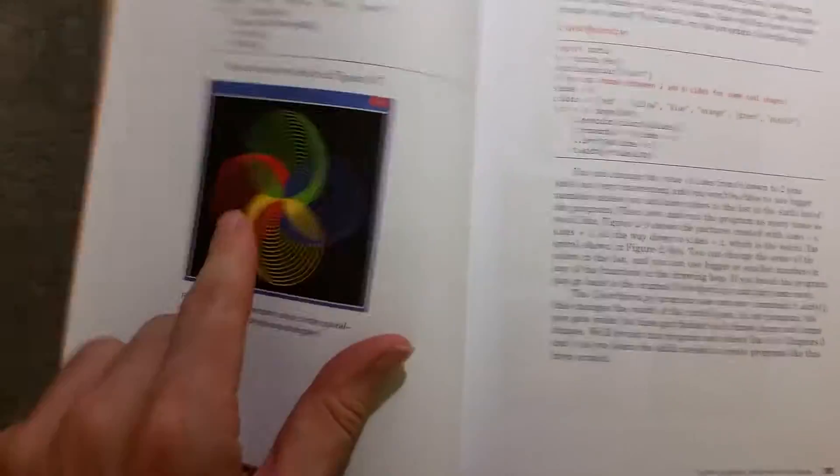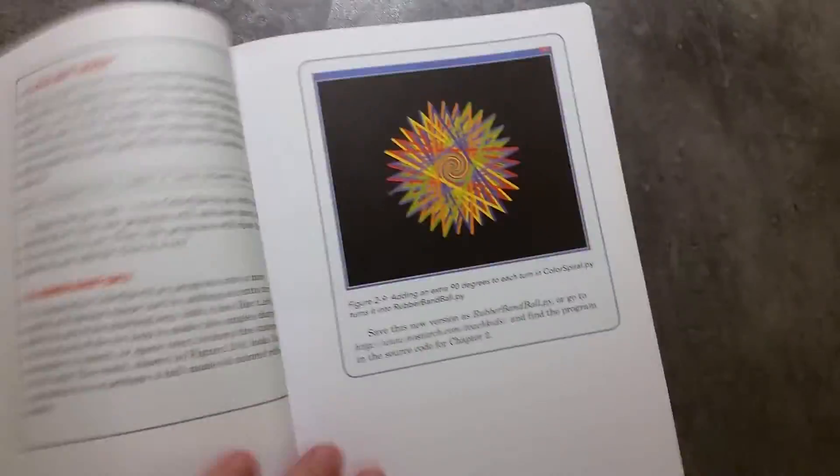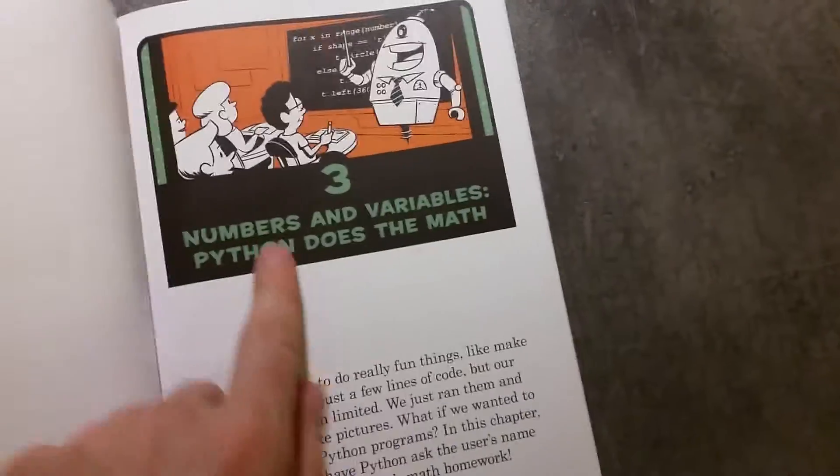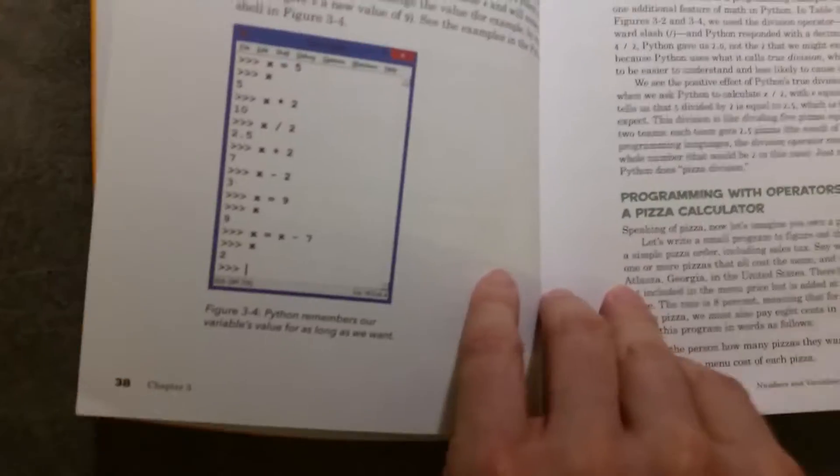Because then in chapter two, after they've done these various different drawings with colors and different shapes, and look, you really get something that looks very rewarding. You move on to numbers and variables, showing you how you can do math in Python. Python really is a calculator, but also teaching you about variables.